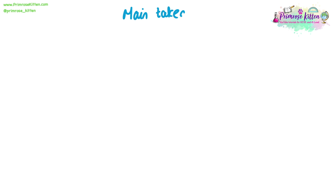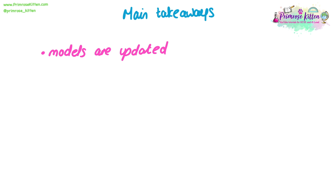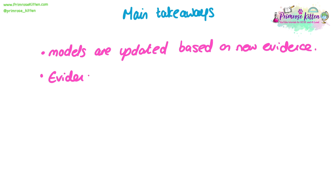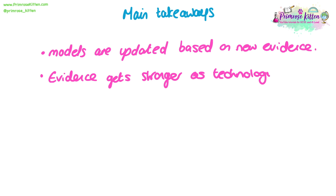The main takeaways from the development of the model of the atom are as follows. First, models are often updated based on new evidence — not randomly, but driven by evidence generated through research. Second, the evidence used to update these models generally gets stronger over time, because technology tends to advance, allowing us to run more complicated experiments and work out more complex updates.